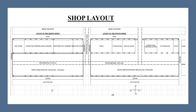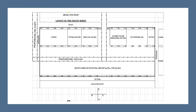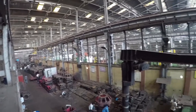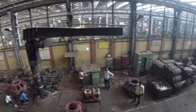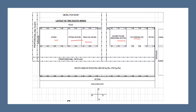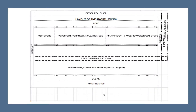Moving on to the shop layout, it is divided into two wings: the south wing and the north wing. The south wing consists of Traction Motor stripping section, Magnet Frame and Rebuilding section, Field Coil section, Pitting section, and Stores. The north wing is divided into M&P Stores, Power Coil Forming and Insulation section, Armature Overhauling and Assembly section, and Field Coil Stores.